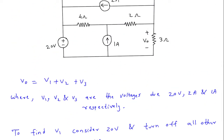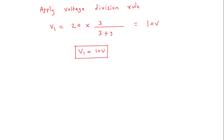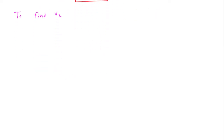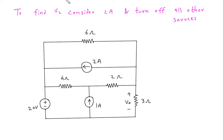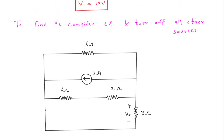Next we have to find V2. To find V2, we will consider the 2A current source and turn off all other sources. The 1A current source will be open circuited, and the 20V voltage source will be short circuited. The output voltage will be V2, not Vo.